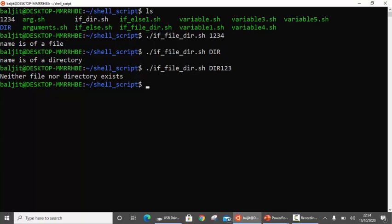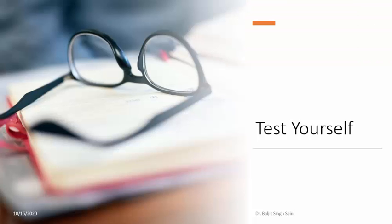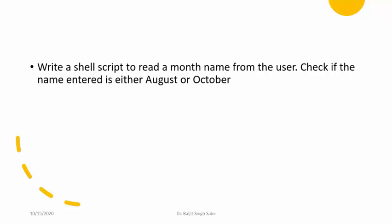This is how we can use elif. Now, one more question for you to test yourself: write a shell script to read a month name from the user and check if the name entered is either August or October. You will need to do string comparison — go back to where I showed you how to compare strings. You will need to check two conditions, so you will be required to use elif.